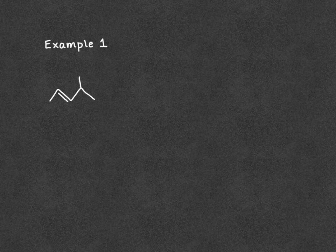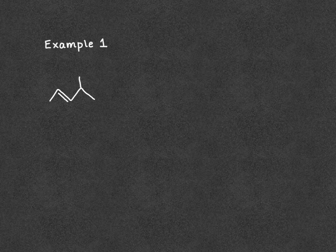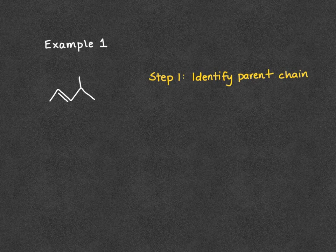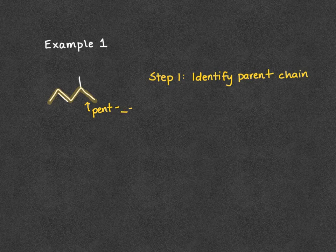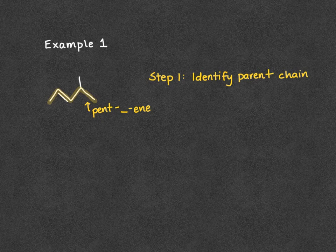In this example, we have a straight chain alkene with a branch. The first step in our naming is to identify our parent chain — the longest continuous chain that contains our double bond. We're going to highlight our parent chain in yellow. Our parent chain has five carbons, so our parent chain is pentene. We'll leave a space because we don't yet know the number for the double bond — so pent-something-ene.